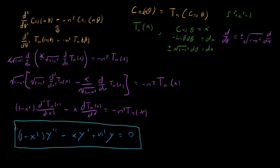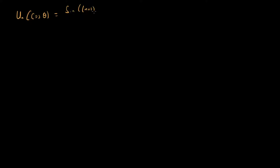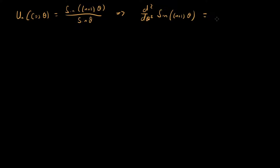Now let's do it again for our Chebyshev polynomial of the second kind on a new page. Recall that our Chebyshev polynomial of the second kind is defined as U sub n of cosine theta equals sine of (n+1) theta all over sine of theta. So we should look at a differential equation of the form: d-squared over d-theta-squared of sine of (n+1) theta, which equals minus (n+1)-squared times sine of (n+1) theta.